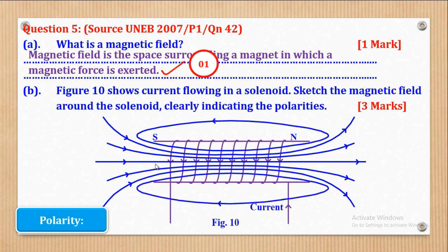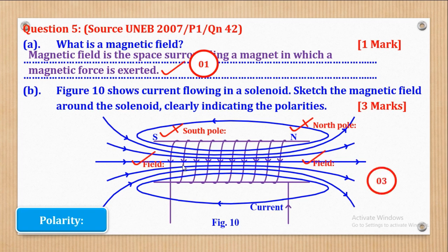That is the field pattern they wanted. Marks are awarded as follows: half a mark for the south pole polarity, half a mark for the north pole polarity, half a mark for the field on one side, and half a mark for the field on the other side — that's how the three marks would be got.